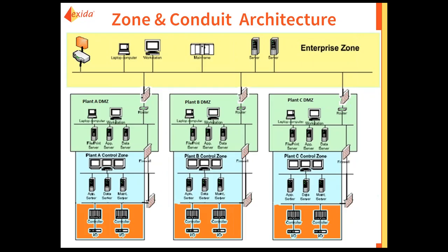Taking that bad example and separating it into zones with conduits: at the enterprise zone we have a firewall and router going out to the Internet. Each plant now has a DMZ — a demilitarized zone — where only enterprise traffic can reach it. We've added another firewall between the DMZ and each control zone, and another firewall in front of the PLCs so only the protocols required to run those devices are allowed through.